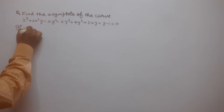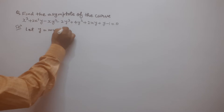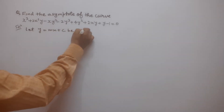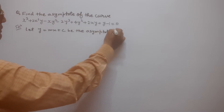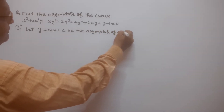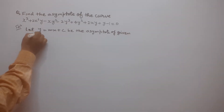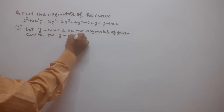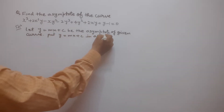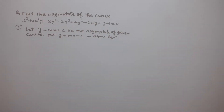First, we suppose that y = mx + c is the asymptote of the given curve. We put y = mx + c into the above equation of the curve.